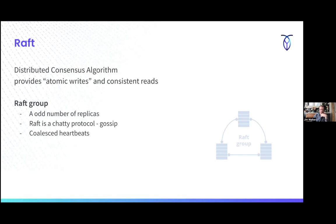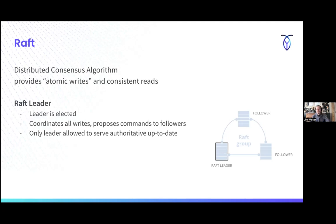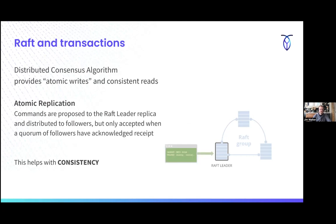Raft uses coalesced heartbeats and time is very important. There's a special replica called the Raft leader. In the Raft protocol, you elect a leader, and the leader is responsible for all writes to the entirety of the group. If you ask the leader for data, you're certain to get authoritative, up-to-date information. In Cockroach, by default it goes to the leader to get data. You can also do follower reads, which relaxes some consistency demands — you ask a follower replica for data and it's okay, depending on your query. Check out secretlivesofdata.com for a great graphic explaining how Raft works. The Raft leader is what allows us to get this kind of atomic replication.